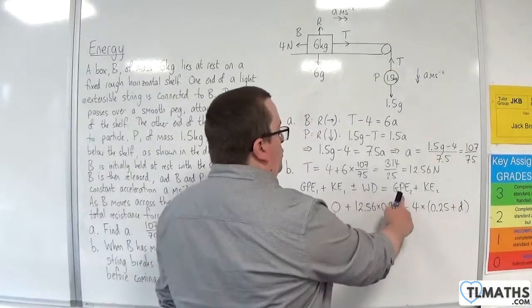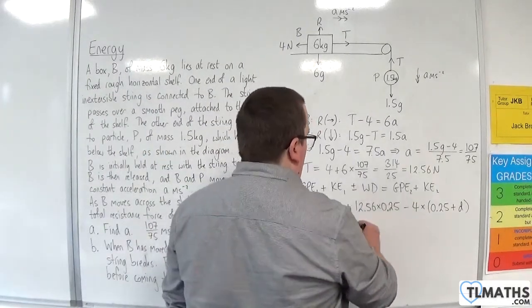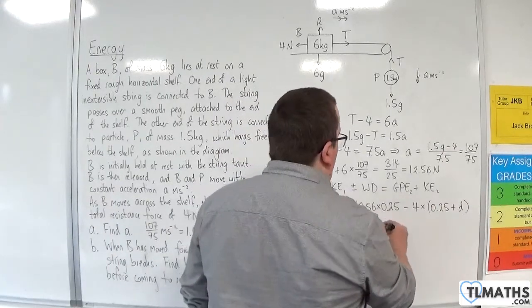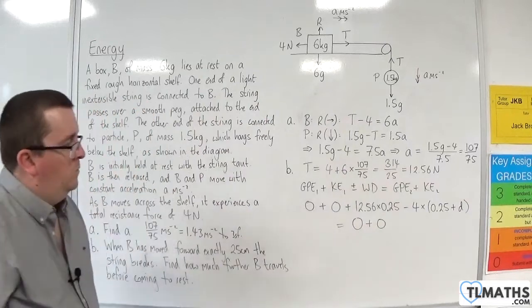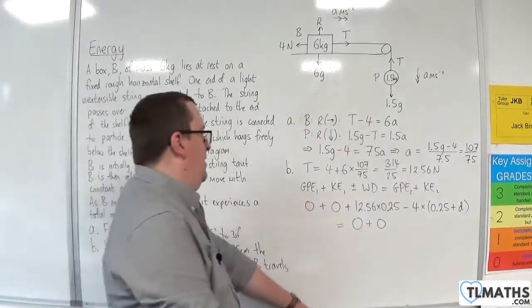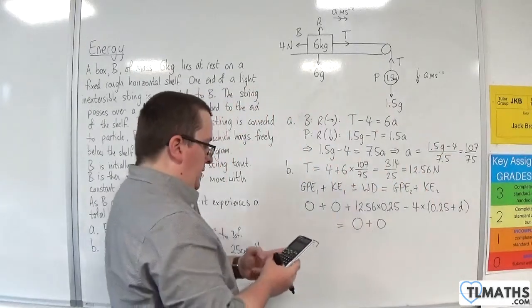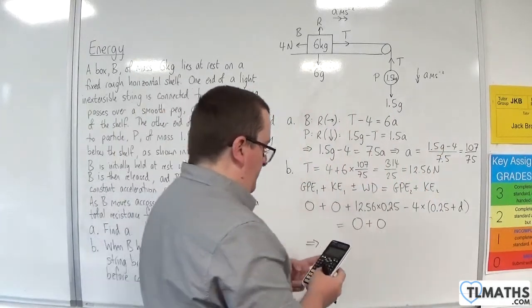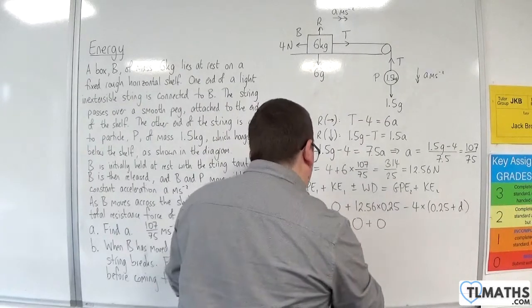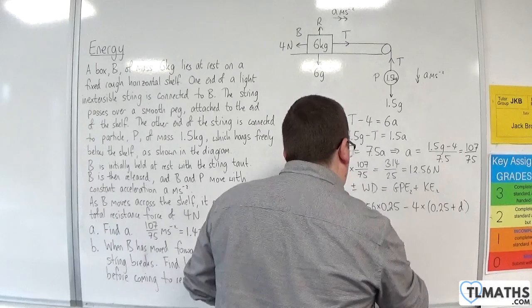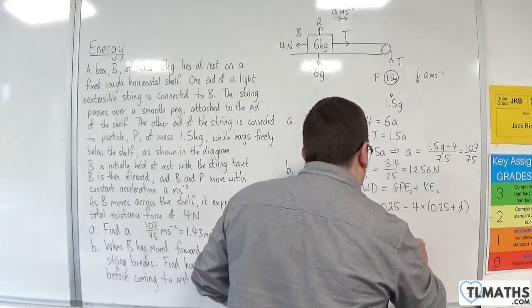Now, that's going to be equal to the final GPE, which is 0, and the final kinetic energy, which will be 0, because it's at rest. OK, so, we have 12.56 times 0.25 is 3.14. And that's going to be equal to 4 lots of 0.25 plus D.